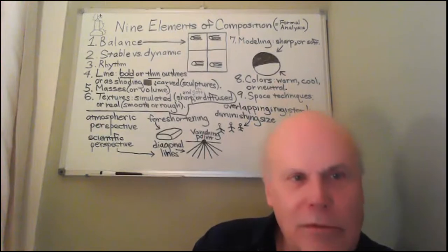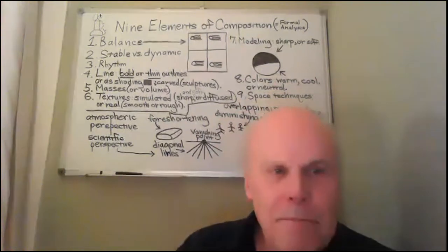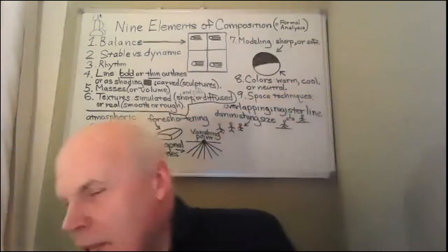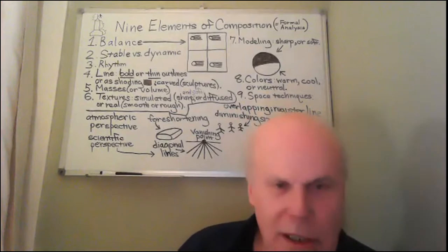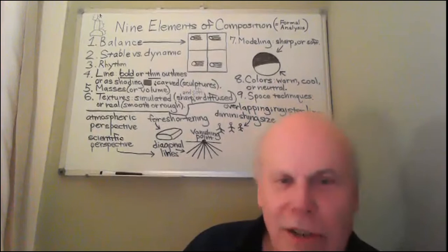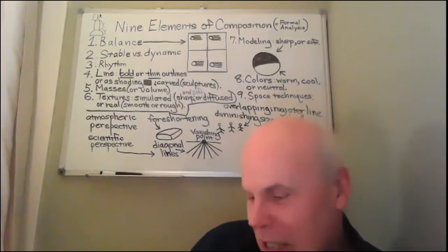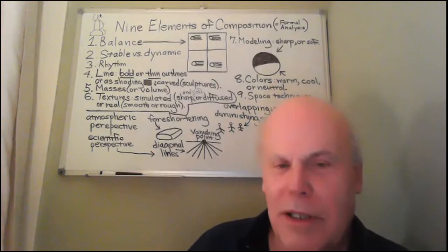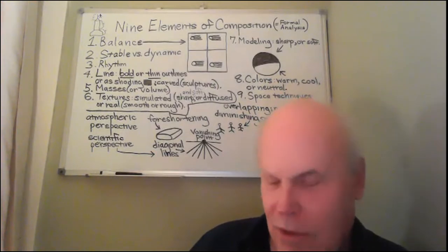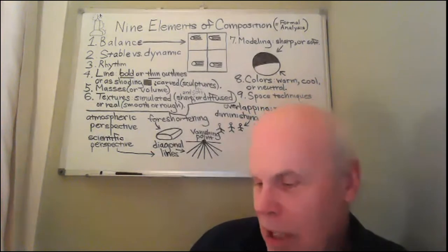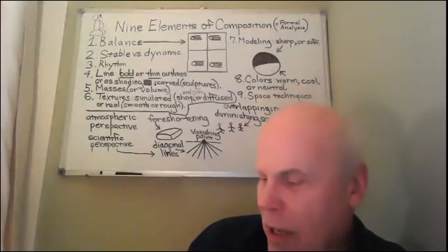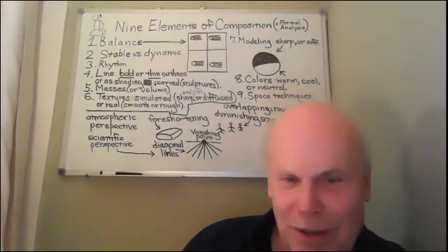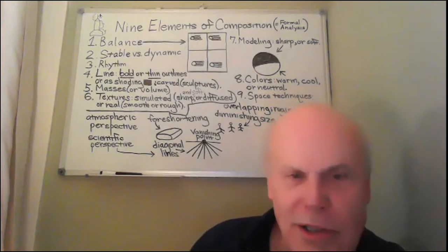Any questions about line? All right — masses. This is the one more people miss than anything else, but it's one of the easiest to analyze. The other term for masses is volume. What are you looking for? The largest objects or parts of a work of art. All we ask you to do is identify the three largest masses or parts in any work of art.